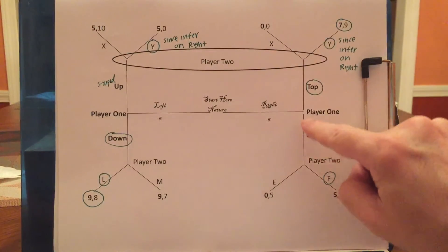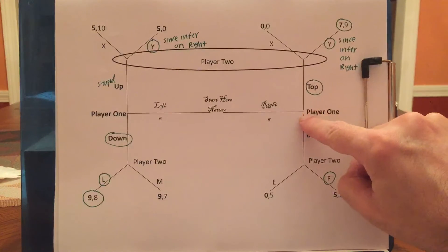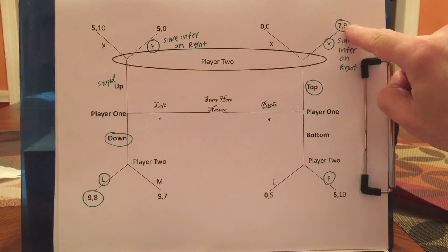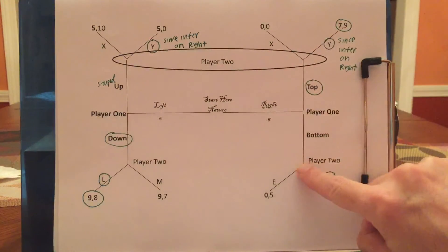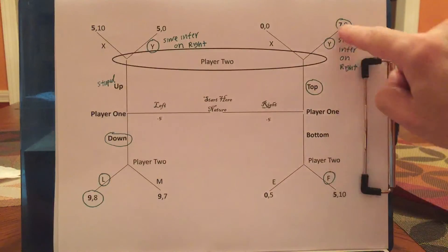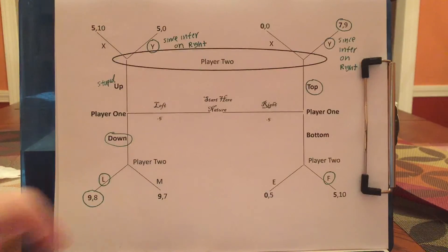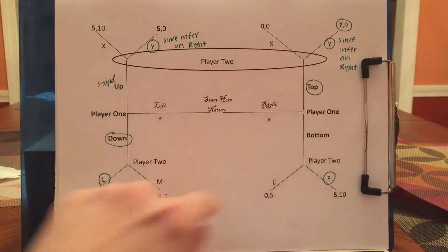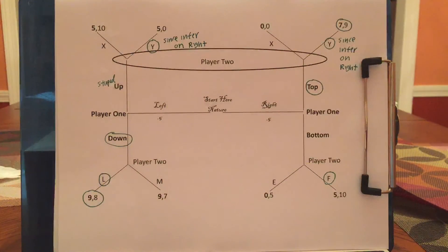Finally, that tells us what player 1 should do if he's a righty. Because if player 1 is a righty, top leads to Y, which leads to 7, whereas bottom leads to F, which leads to 5 — 7 is better than 5. And we have our equilibrium, where we end up here half the time because of this 0.5, and we end up here half the time because of this 0.5.